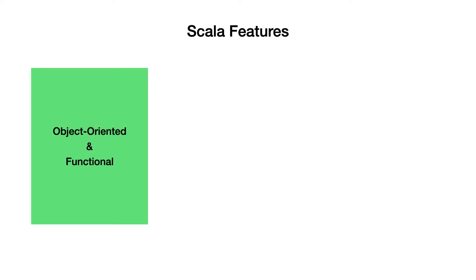Scala is a blend of object-oriented and functional programming language. That means as a programmer, you may already have experience working with the object-oriented model, so you could pretty much come on day one and start writing code in Scala while learning functional programming. This lowers the barrier to a large extent. However, even though you can continue to write object-oriented code, I would strongly encourage you to learn the functional programming paradigms since it opens up a whole new world of programming.